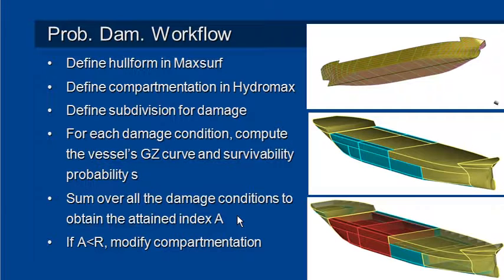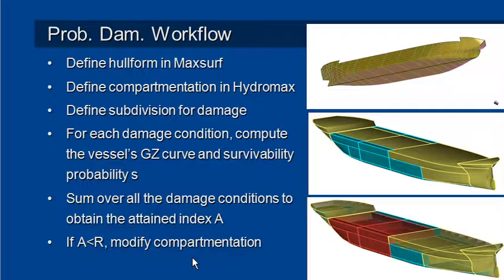The combination of all of the probabilities of those damage conditions will give us our attained index A. If it exceeds the required R then we're okay. If A is less than R then we may need to modify our compartmentation in order to comply with the code. That completes our introduction to the probabilistic damage approach.